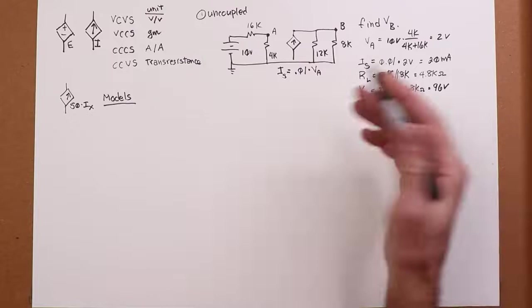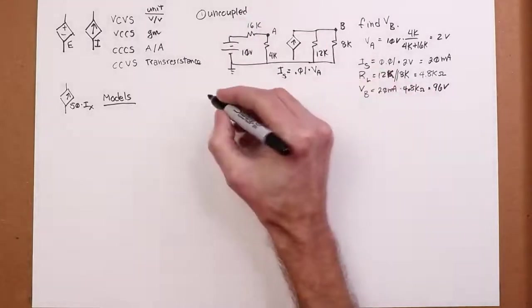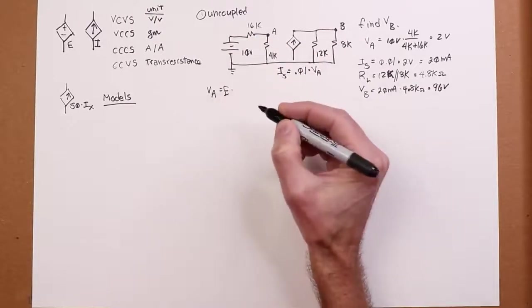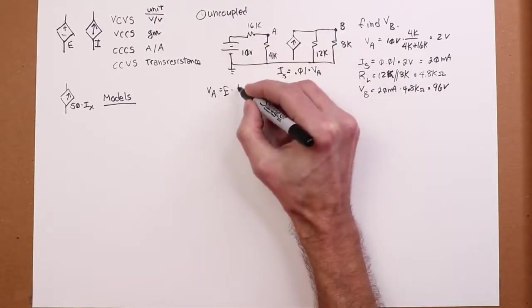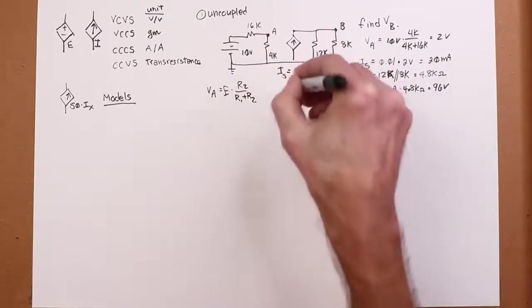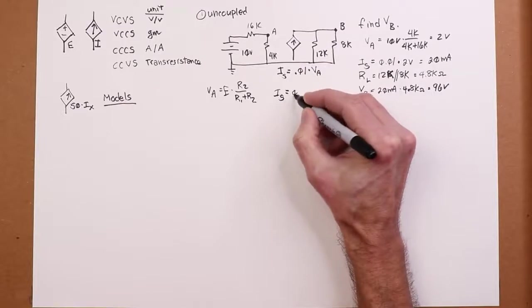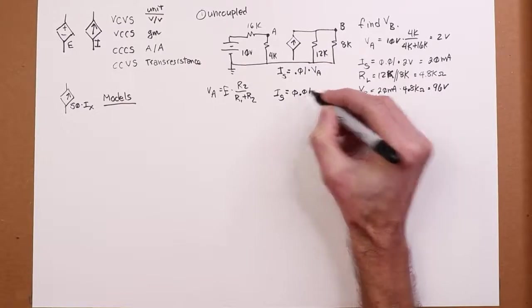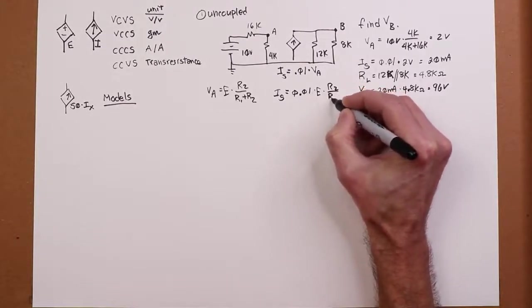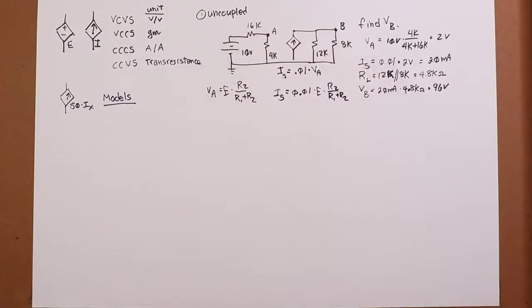Now, you could also, alternately, you could write your source as an expression. In other words, if this is going to change, it might be more convenient to do it that way. In other words, you could say, well, VA is the source E times, I'll call this R2 and this R1, R2 over R1 plus R2. Then you can put that expression in here. In other words, such that IS must be 0.01 times E times R2 over R1 plus R2. Like I said, that's useful if elements back here are changing.